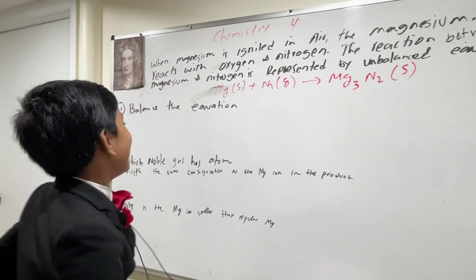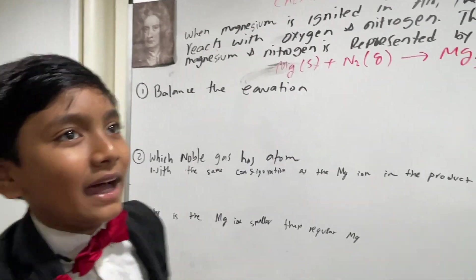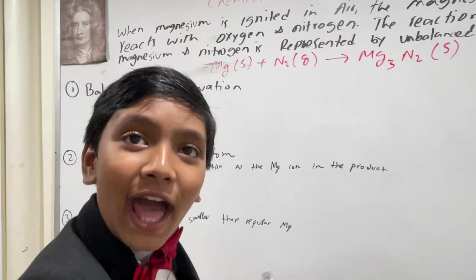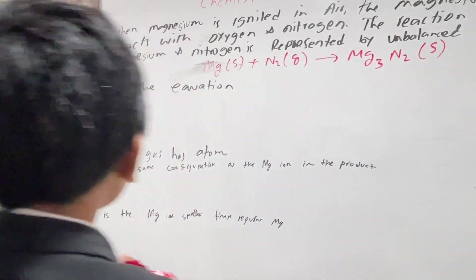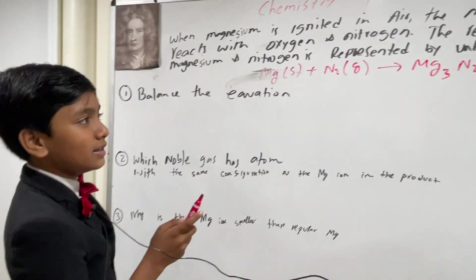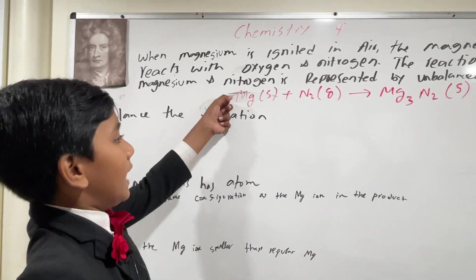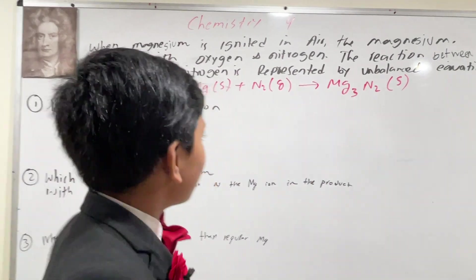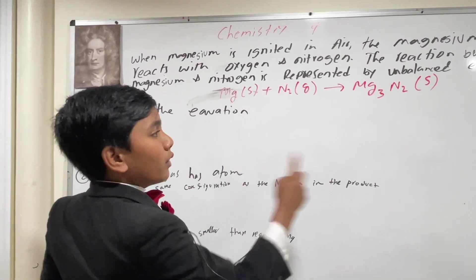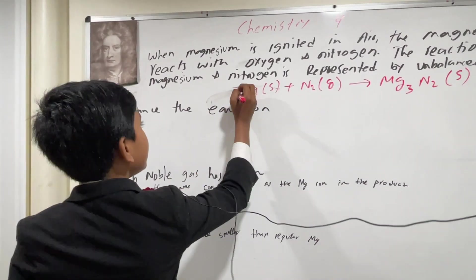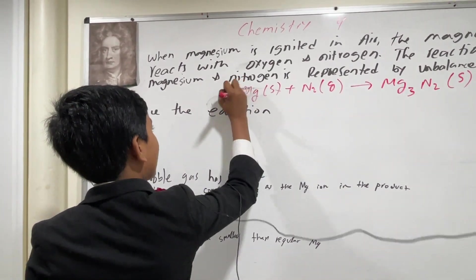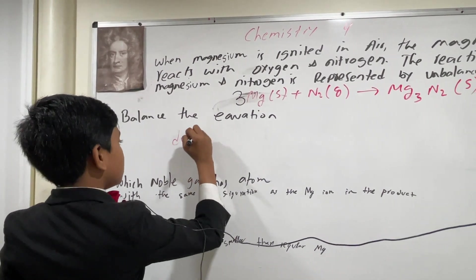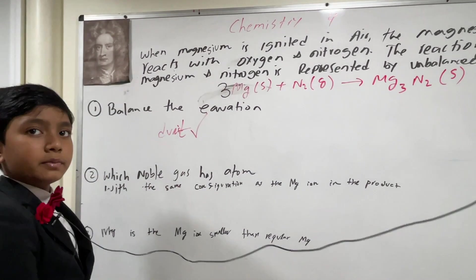So today, first we're gonna balance the equation. So how do we do that? Do you see? Mg, Mg3, N2. Alright, that's fine. All we need to do is just add 3Mg. So now that's the first problem done.